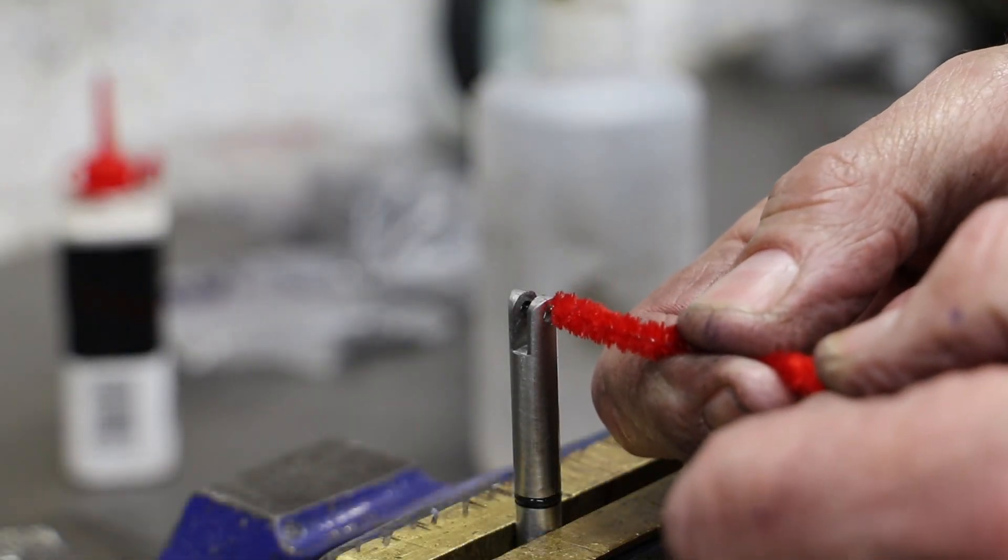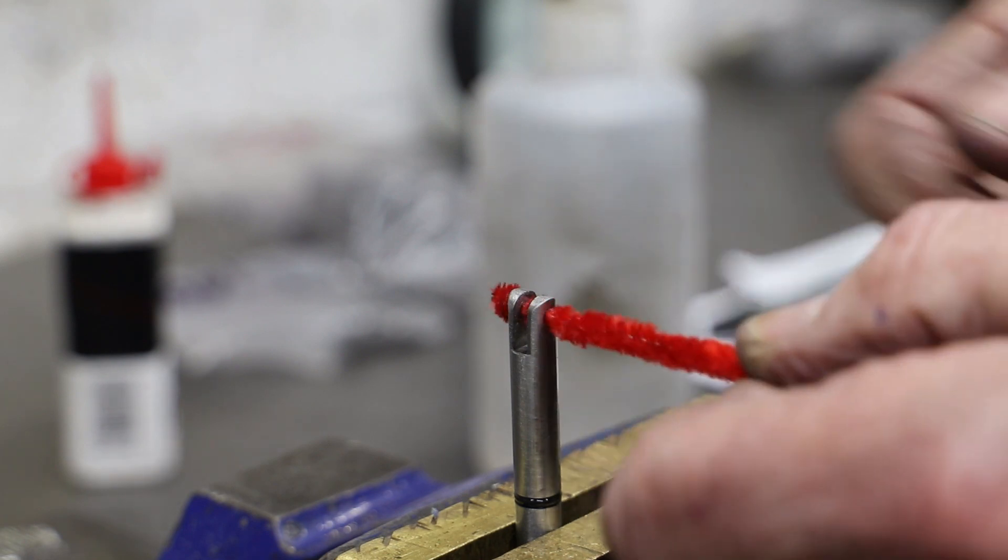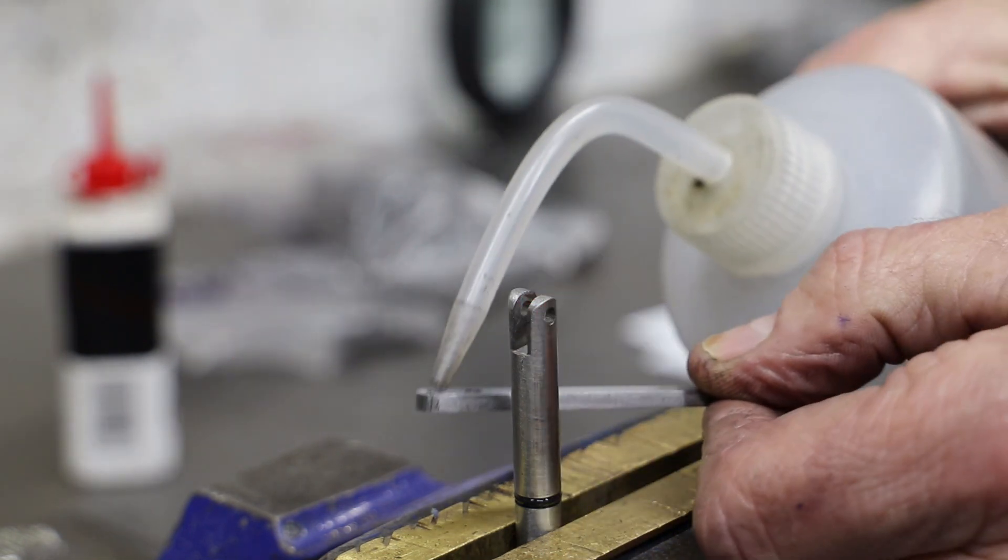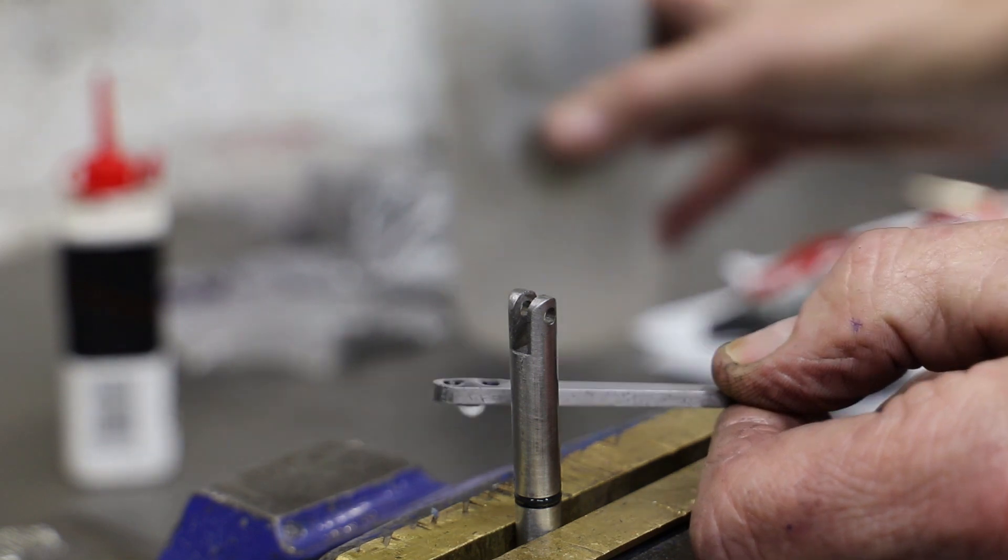The first joint I tackle is the valve spindle to the combination lever. First, I give the parts a good clean with acetone.